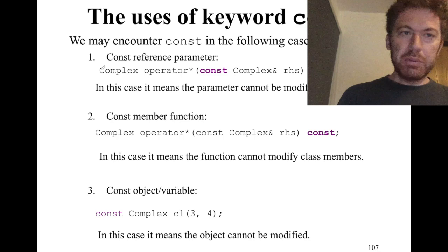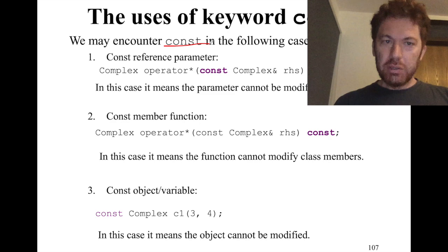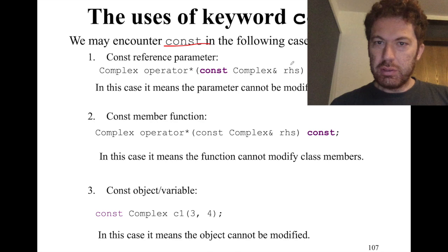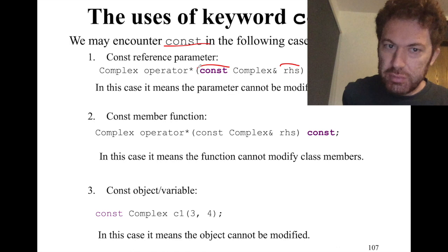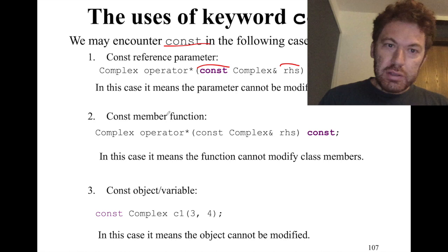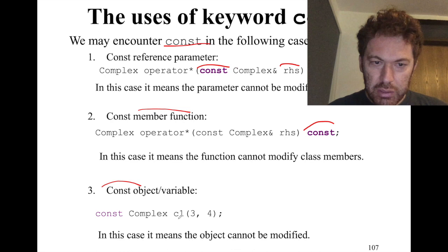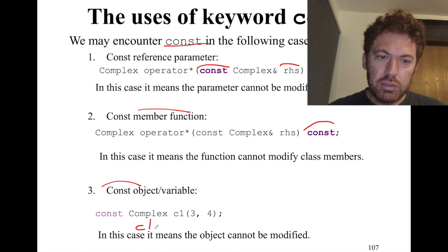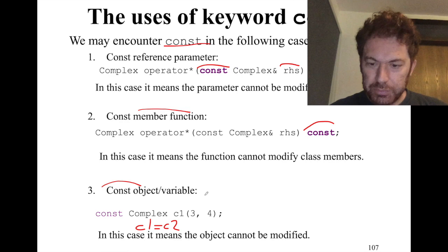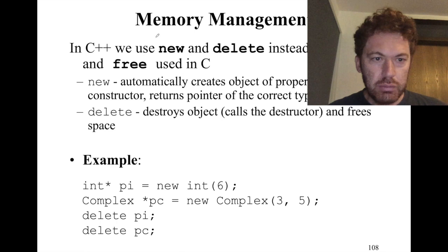To wrap up: we may encounter const in three cases. First, a constant reference parameter like 'const Complex& rhs' ensures nothing in that parameter gets modified. Second, a constant member function — the const at the end of the function signature — guarantees the function cannot modify the class members. Third, a constant object or variable — like 'const Complex c1' — guarantees you can't update its state, so 'c1 = c2' would be an error.